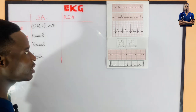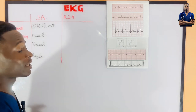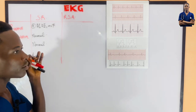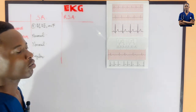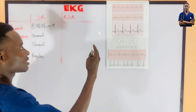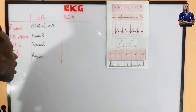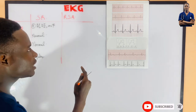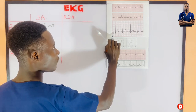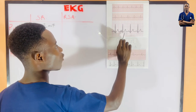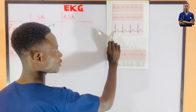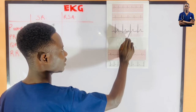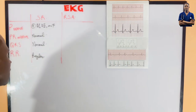The PR interval must also be normal — we know the normal PR interval is between 3 to 5 small boxes. The QRS complex must also be normal, and each P wave must have a QRS complex. So we have: P → QRS complex, P → QRS complex, P → QRS complex.